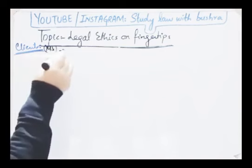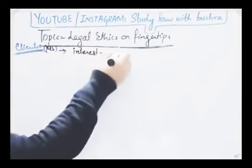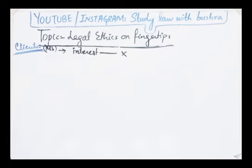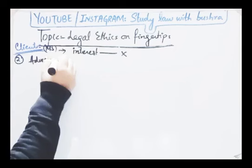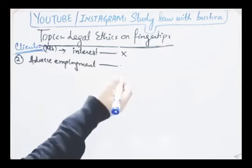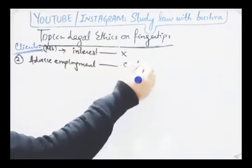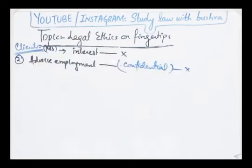Next aati hai hum second category par — 'Conduct with regards to Client.' Ye start hota hai Rule 145 se. Pehli baat: 'An advocate shall not acquire an interest adverse to the client in property or interest involved in the case' — ke advocate client ki property ya uske case ke against koi bhi interest acquire nahi karega. Adverse employment ki baat ki gayi hai ke koi bhi advocate apne client ko chhorke opposite client ki employment mein nahi jaega. Aur agar aapka client aapko chhorke kisi doosre advocate ke paas chala jaata hai to usne jo information aapke saath share ki hai, woh confidential information hai — aapki duty hai ke aap usko kisi third person ke saath share nahi karoge.